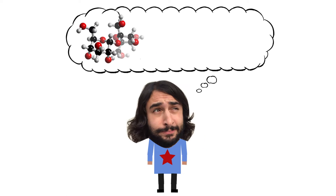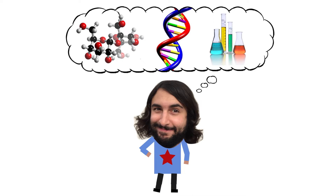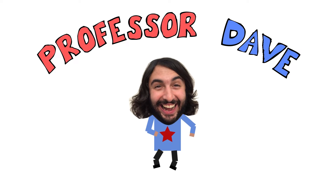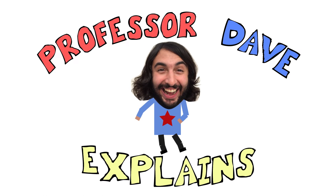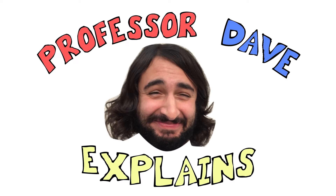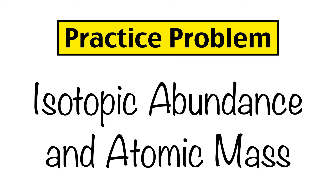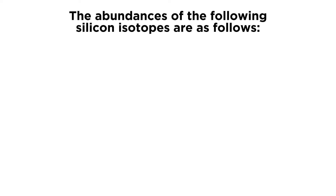He knows a lot about the science stuff — Professor Dave Explains. So let's look at a problem regarding isotopic abundance and atomic mass. The question says the abundances of the following silicon isotopes are as follows.